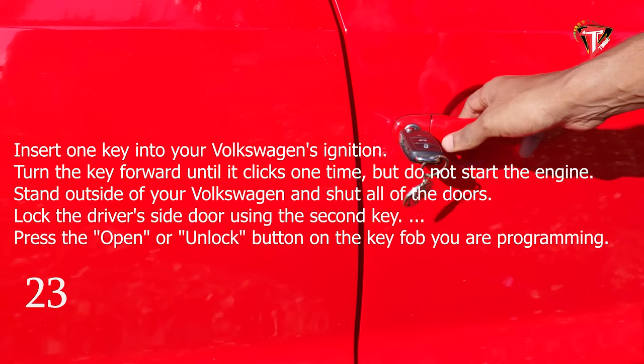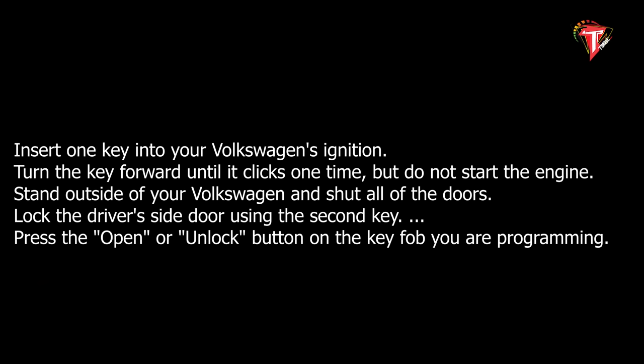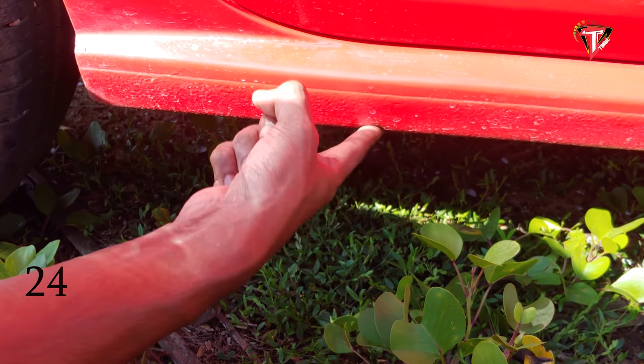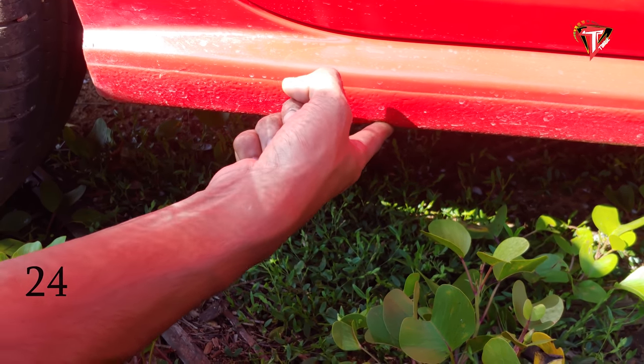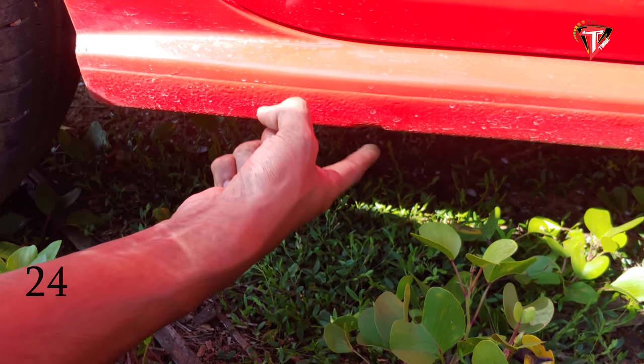If you want to re-synchronize the key, you can use the keyhole to get the key on, and you can troubleshoot it automatically. If you want to see that problem, you can synchronize it. The next feature is the jacking point, which is very important in a car.